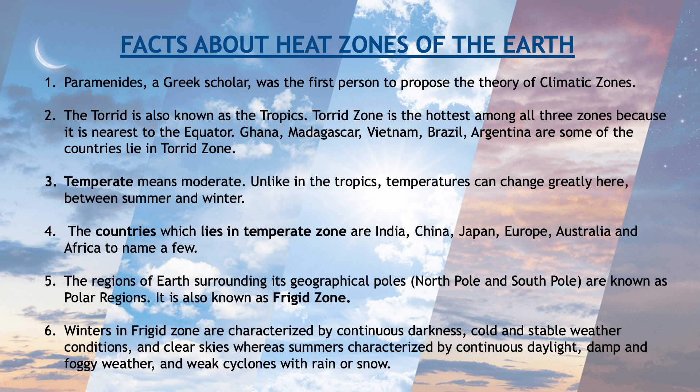Ghana, Madagascar, Vietnam, Brazil, and Argentina are some of the countries that lie in the torrid zone. Temperate means moderate. Unlike in the tropics, temperatures can change greatly here between summer and winter. Temperate zone mein winters and summers ki season mein temperatures mein kaafi difference dekhne ko milta hai. The countries which lie in the temperate zone are India, China, Japan, Europe, Australia, and Africa, to name a few.